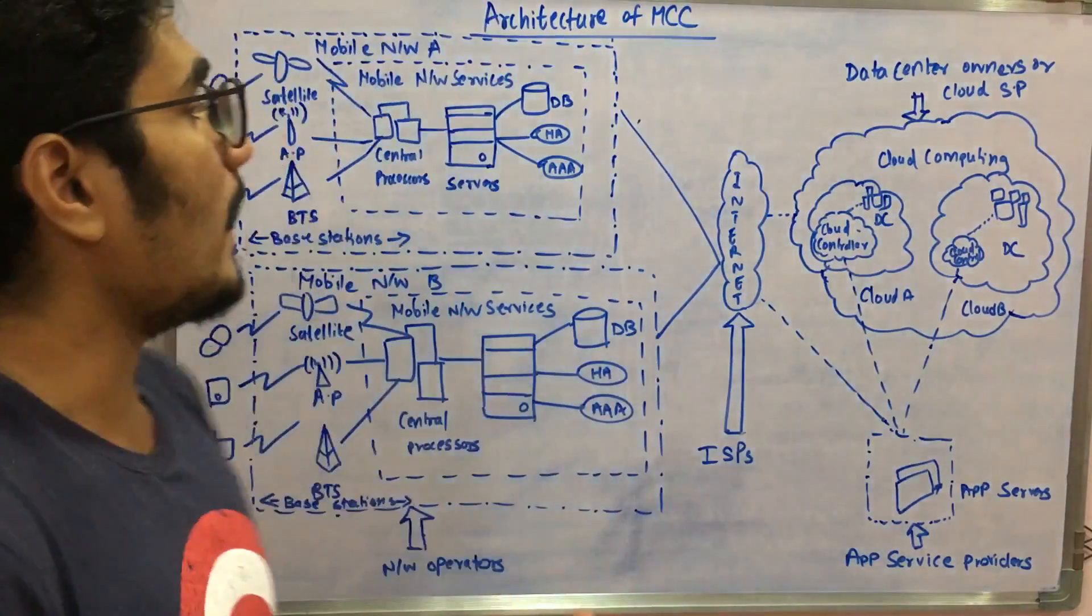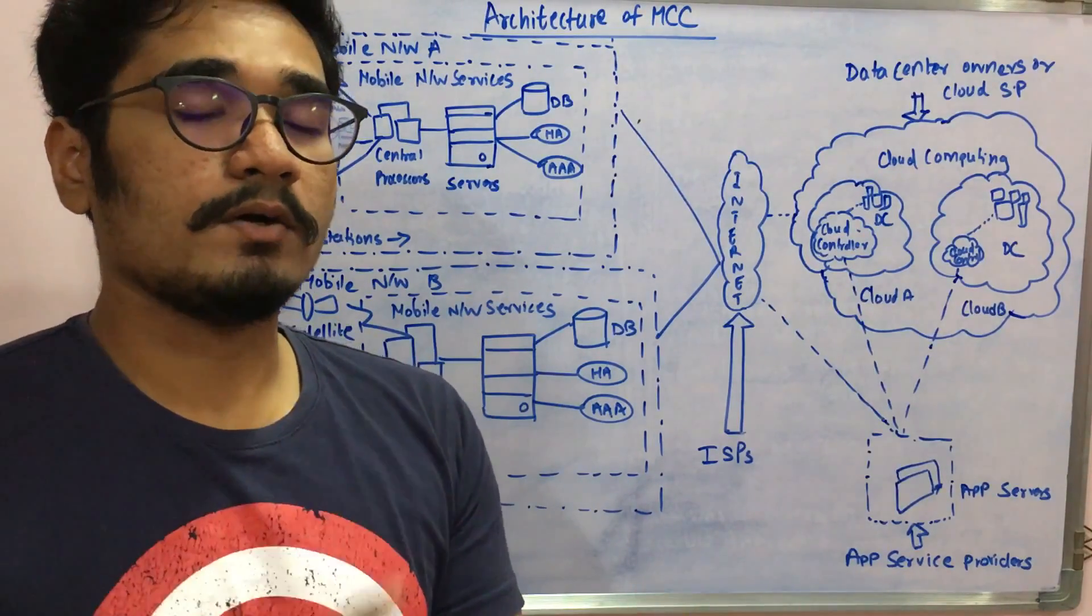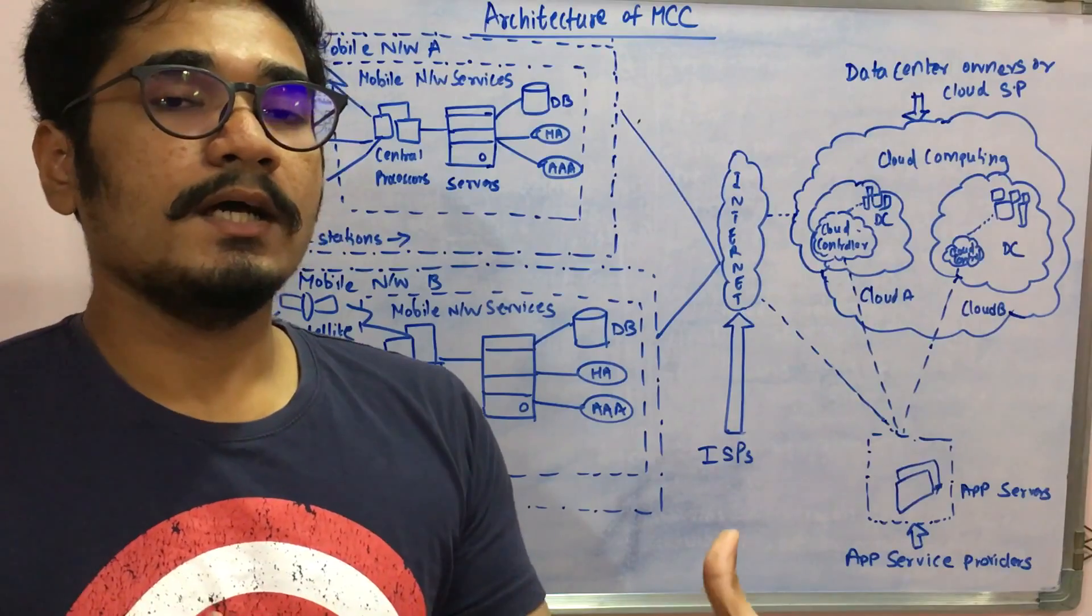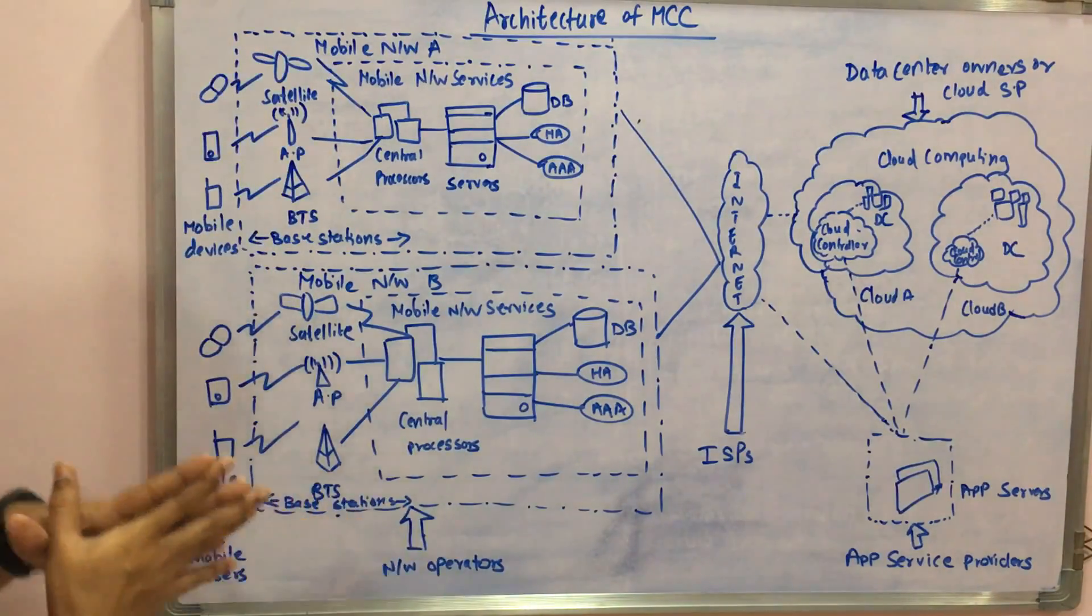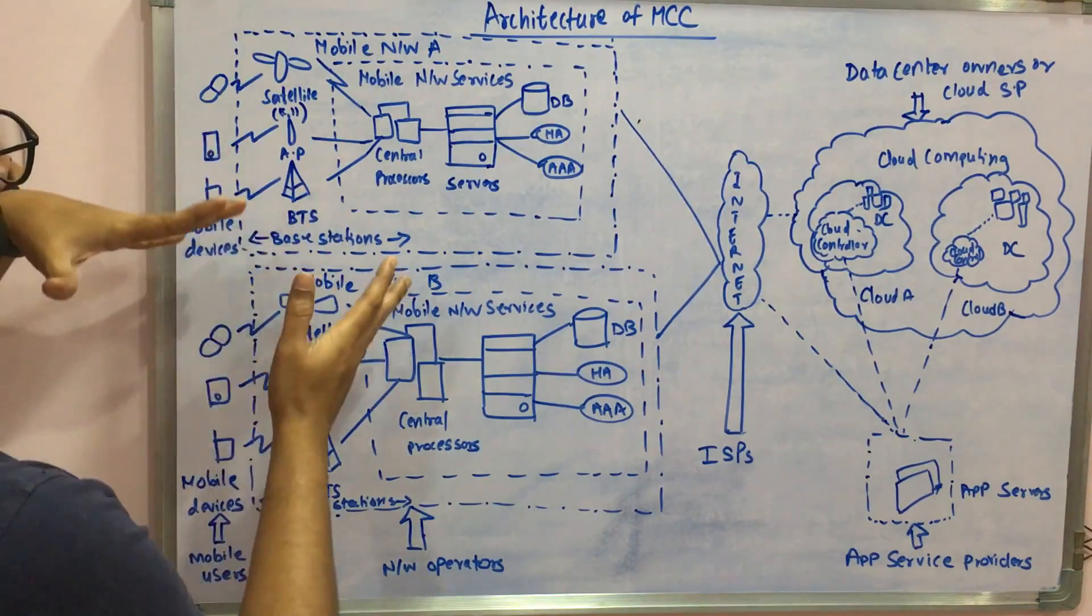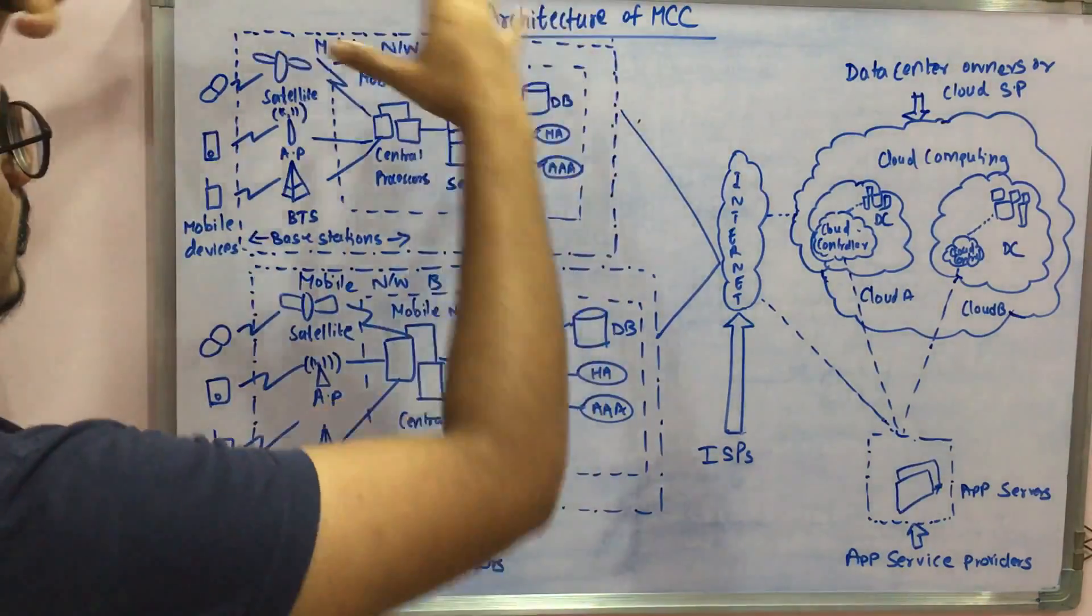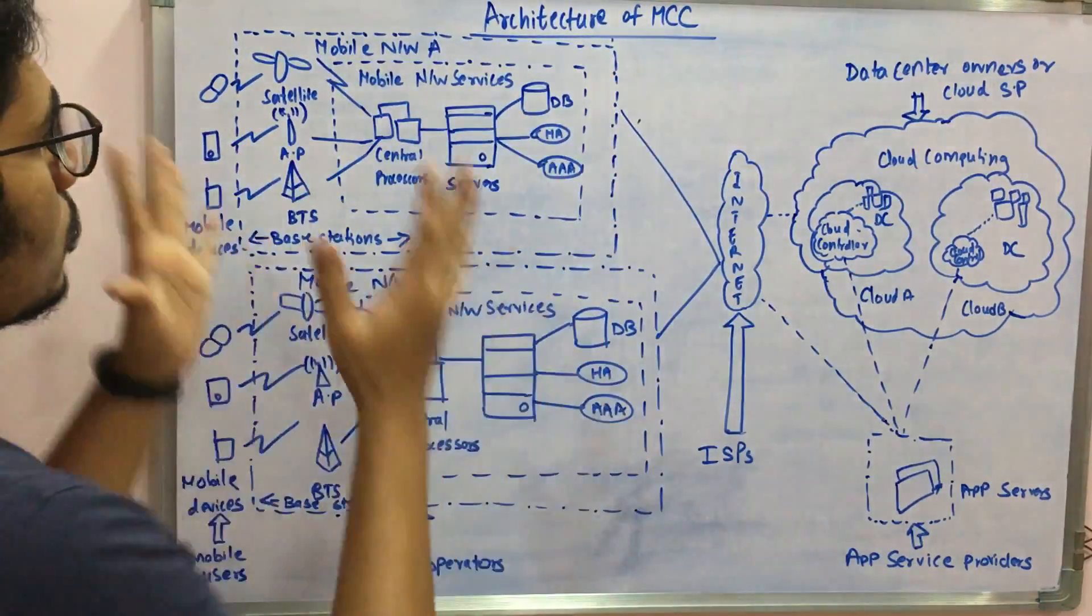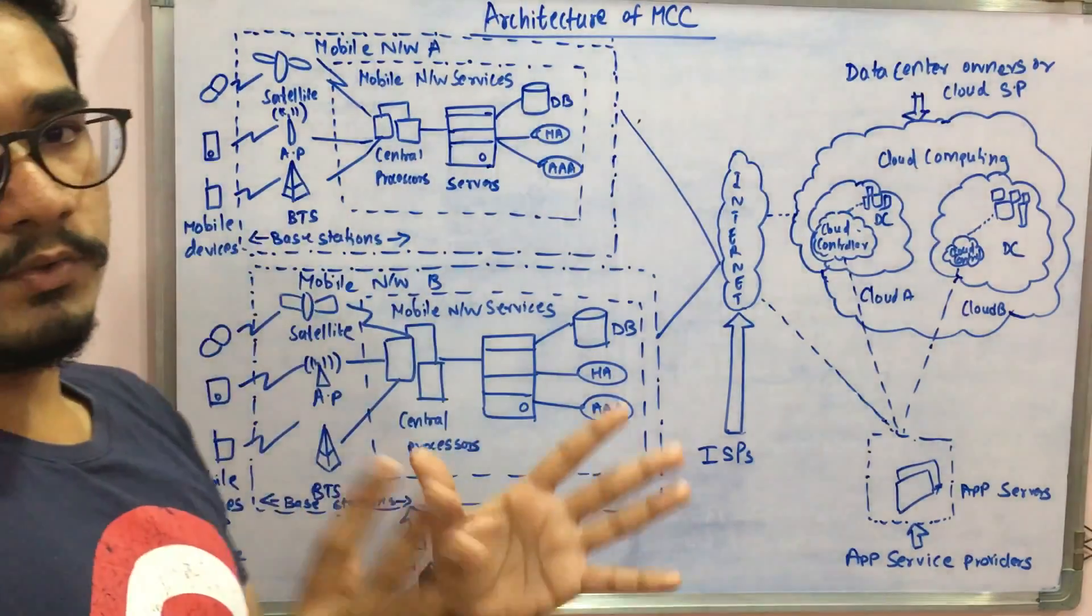Well, it's a big diagram but you need not worry, it's just an easy diagram. You just need to understand the concepts of how the data is routed and where it's been processed. At the beginning you have some mobile devices, then you have some base station which gives rise to mobile network services which entirely comprises a mobile network.